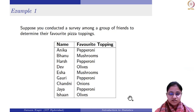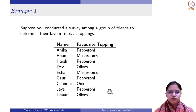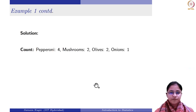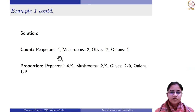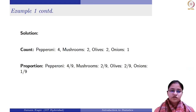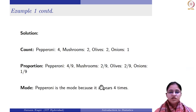Let us start with the count. Counting pepperoni: 1, 2, 3, 4 — so 4 is the count for pepperoni. For mushrooms it is 2, olives also 2, and for onions it is 1. The total number of friends is 9. So proportion is: pepperoni = 4/9, mushrooms = 2/9, olives = 2/9, and onions = 1/9. For mode, pepperoni appears the maximum number of times, so the mode is pepperoni.